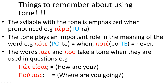The tone plays an important role in the meaning of the word. The word pote means when, however the word pote means never. As you can see, both of the words are written in exactly the same way, with one difference — the tone. And this is what makes them different and also the reason why they have a different meaning.